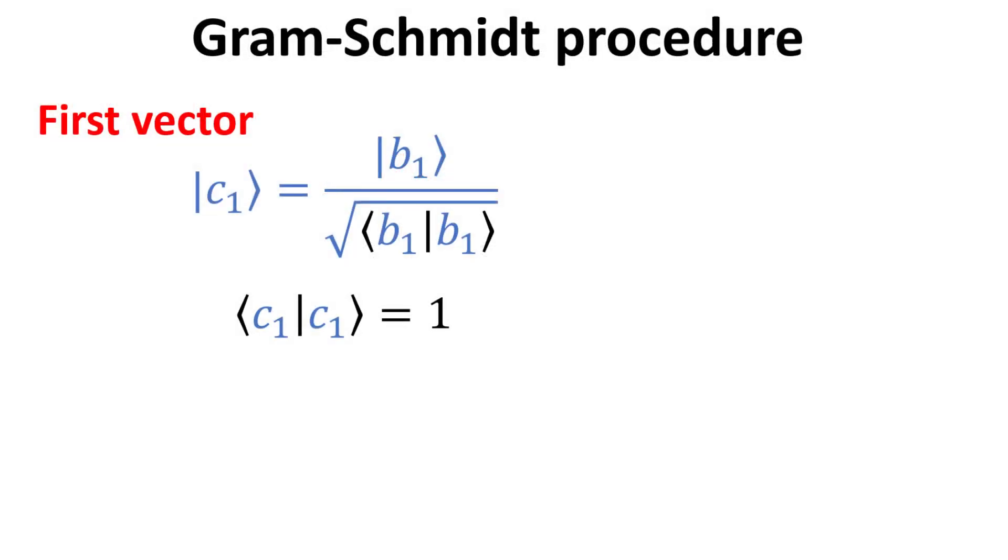The procedure begins by picking the first vector C1, which can be any unit vector of your choice. Here, we shall pick B1 ket. Since it might not necessarily be normalized, we divide it by the square root of its inner product with itself. Thus, C1 defined as such is normalized.